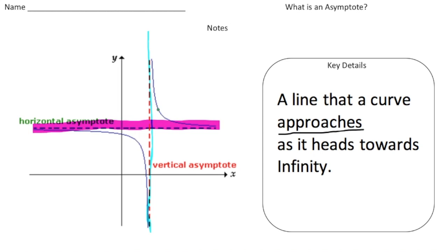Now that you know what an asymptote is, pause the video and try the your turn problems. You're going to need two different color highlighters. When you're done, hit play and you can see how you did. Good luck.